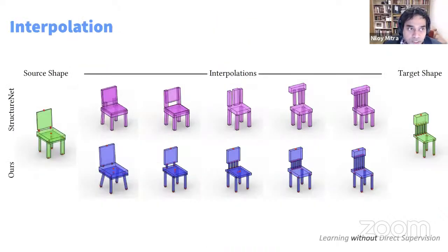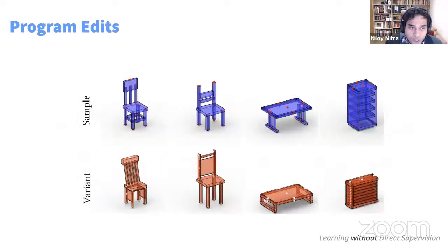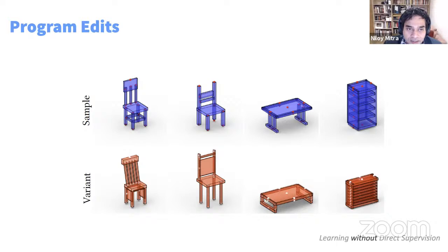We can interpolate in this space, going from source to target by projecting into the program latent space and executing. We can also do edits — this was one of the stronger motivations. We can change parameters like the size of cuboids or how they are attached. We're working on improving the expressiveness of edits, since we were not completely satisfied with the current version.